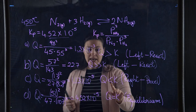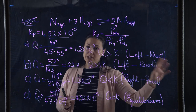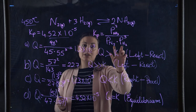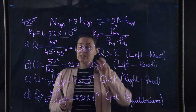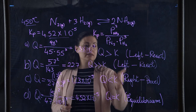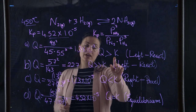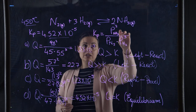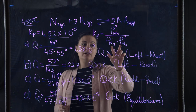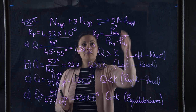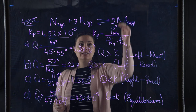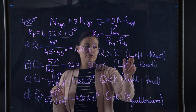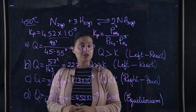To summarize: if Q equals K, you are at equilibrium with no net change in concentrations. If Q is less than K, the reaction proceeds to the right to make more product — increasing the numerator and decreasing the denominator. If Q is greater than K, the reaction proceeds to the left — decreasing the numerator and increasing the denominator by forming reactants from products.